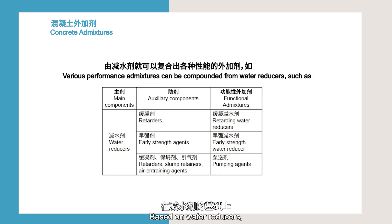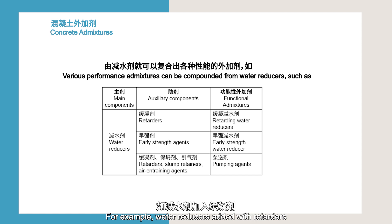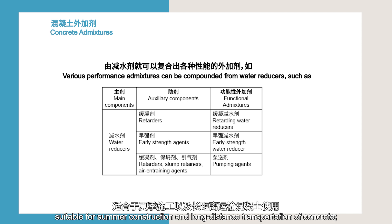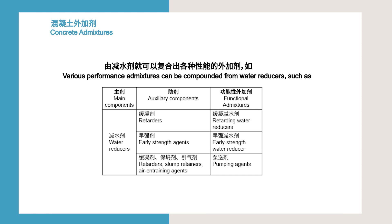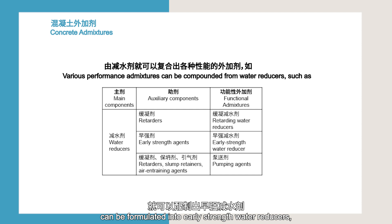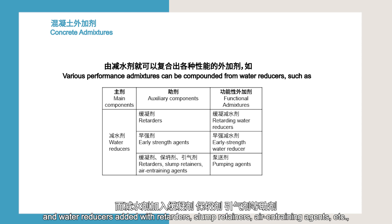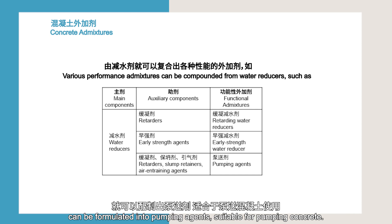Based on water reducers, various performance admixtures can be compounded. For example, water reducers added with retarders can be formulated into retarding water reducers, suitable for summer construction and long-distance transportation of concrete. Water reducers added with early strength agents can be formulated into early strength water reducers, suitable for winter concrete. Water reducers added with retarders, slump retainers, air-entraining agents, etc., can be formulated into pumping agents, suitable for pumping concrete.